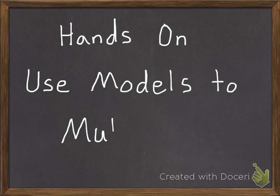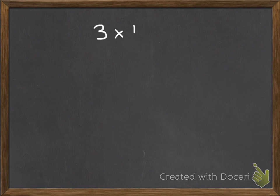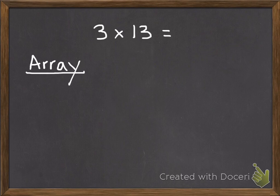Today's lesson is a hands-on lesson where we'll use models to multiply. I have a problem like 3 times 13. One strategy I can use is to make an array. An array is a model that has equal rows and columns.